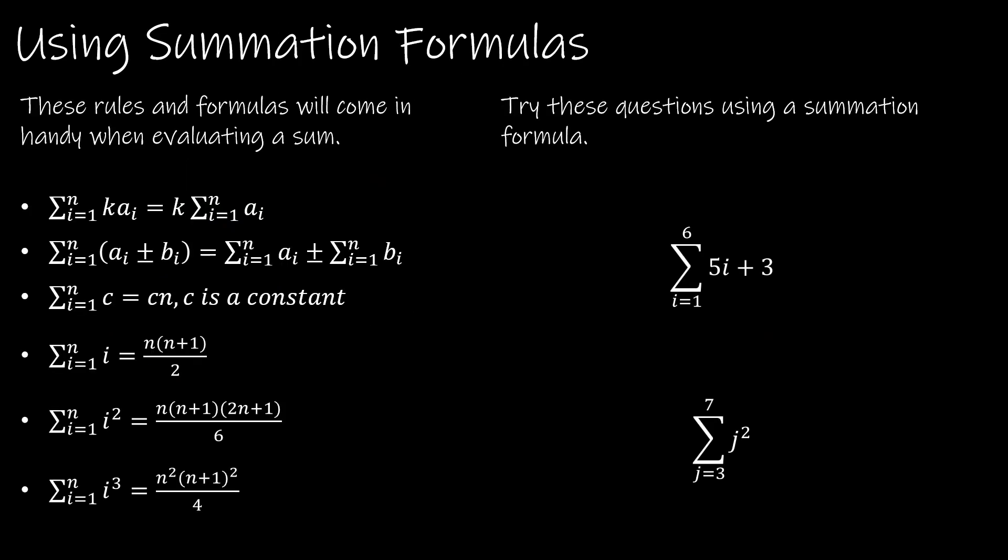We're going to end by taking a look at some properties and some summation formulas that you will want to know as we work through sigma notation. The first two are very straightforward. The first one says, hey, if you have a constant in front of each value in your summation, it's okay to take the constant out front. The second one says, if you're finding the sum or difference, that it's okay to evaluate each part of that sum or difference individually, and then add or subtract those from one another.